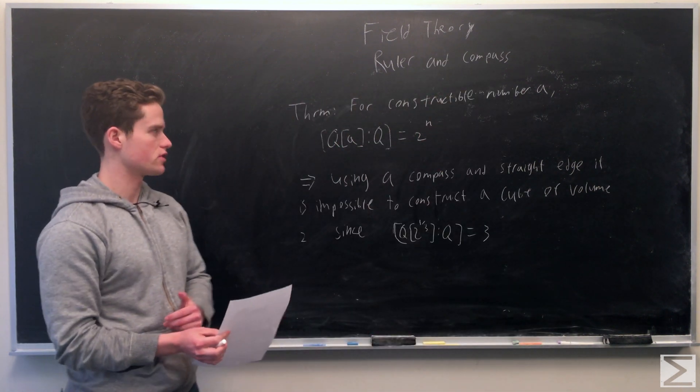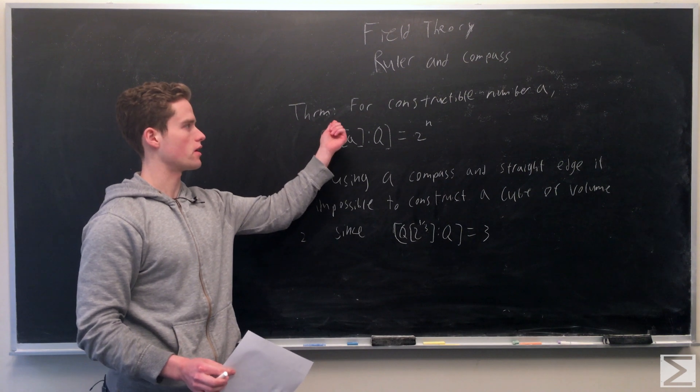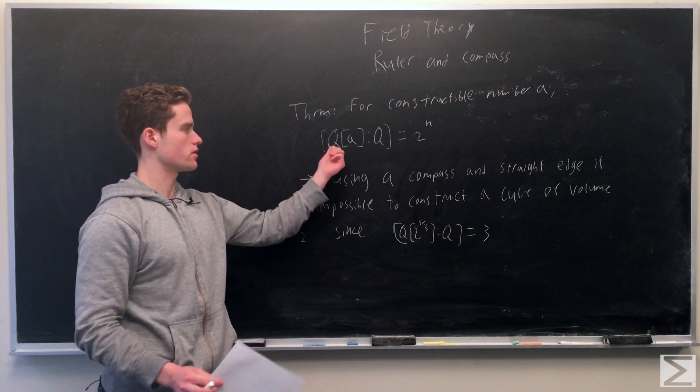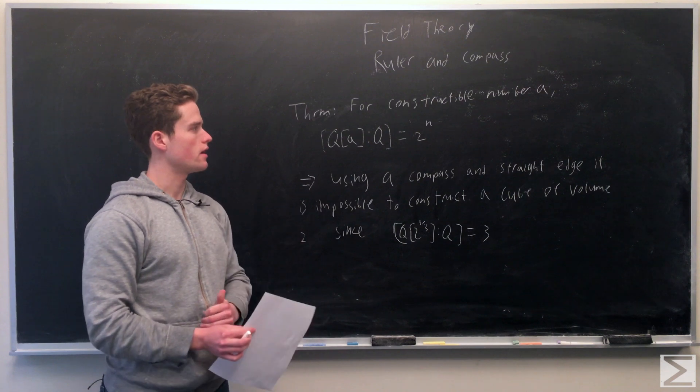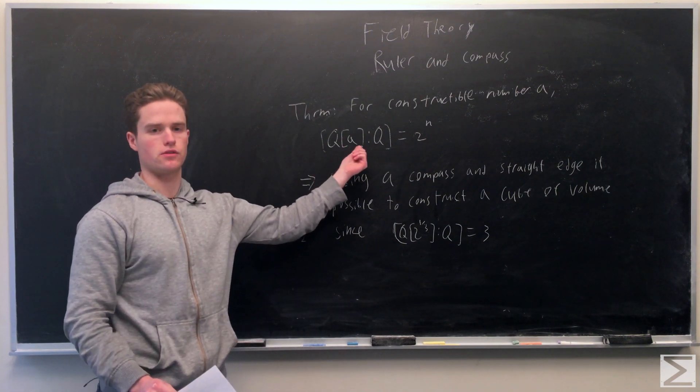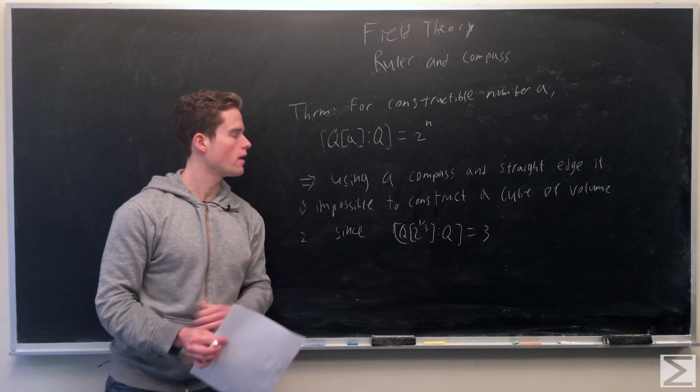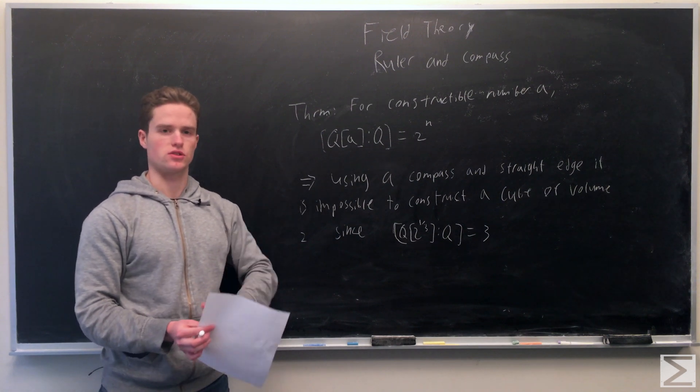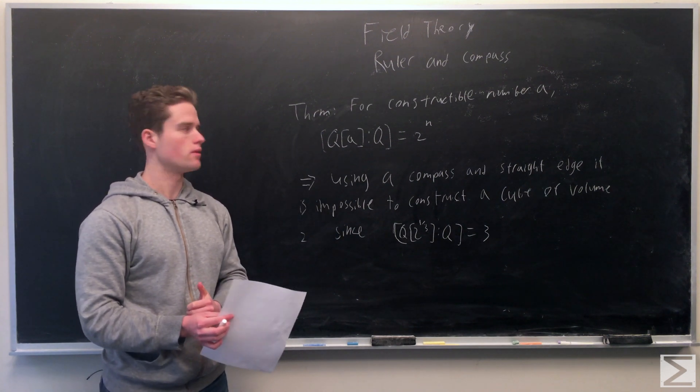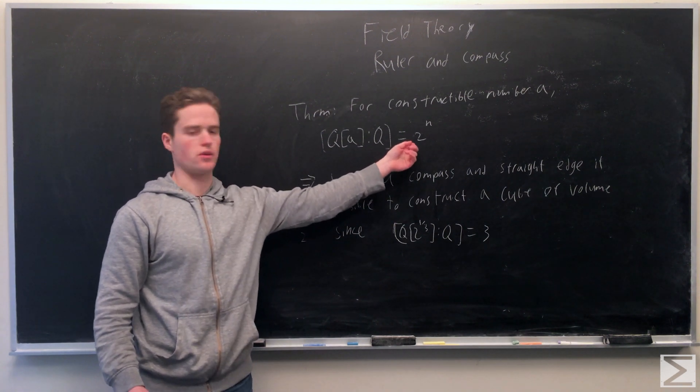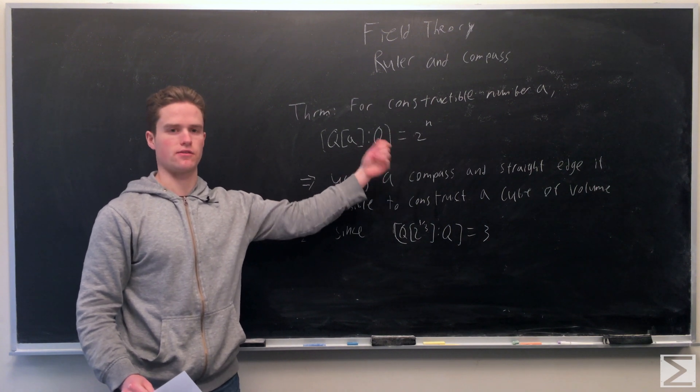Something you can show but we won't show here: for constructible number A, the extension Q with A appended over Q, this field extension will have degree some power of 2. You can show this by looking at the intersections between circles and lines and seeing how the numbers are related by quadratic equations.